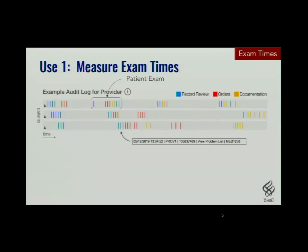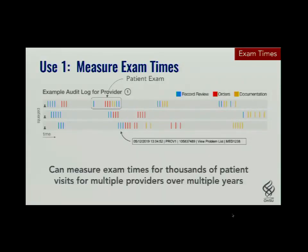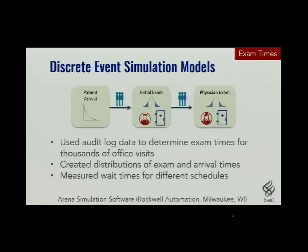The first thing we can do is look at exam times. Using contextual data about our patients, we know when they checked in and which workstations are clinic exam rooms. We can identify timestamps that happened during an exam, figure out when the first and last one were, and determine how long the exam took. This gives us a way of measuring exam times for many, many patients and many providers over time, which allows us to do a lot of different things.